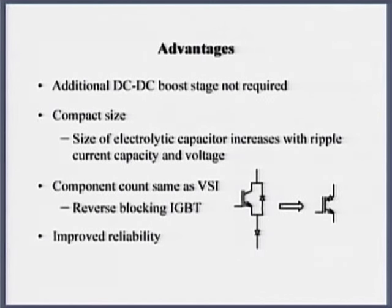What are the advantages? I do not need to have a separate DC to DC converter. The additional DC to DC converter that is required in voltage source is eliminated here. DC boost is not required. Compact size - electrolytic capacitor is absent. By the way, electrolytic capacitor is determined by the ripple current that it has to supply, not the voltage ripple. It is the ripple current that has to supply.